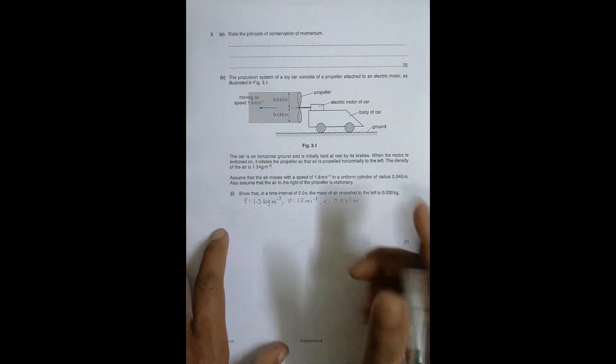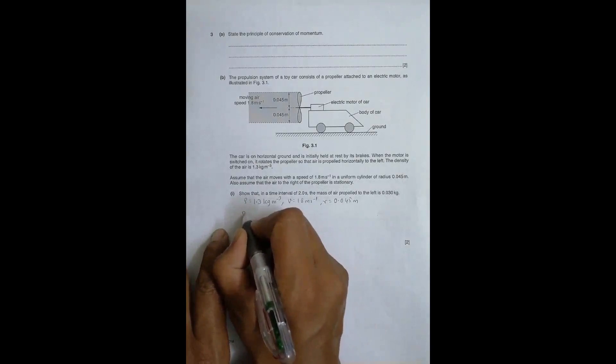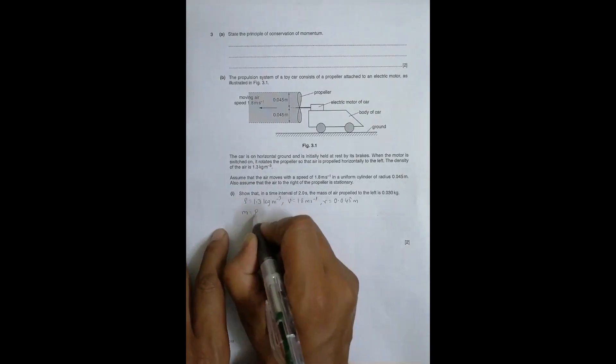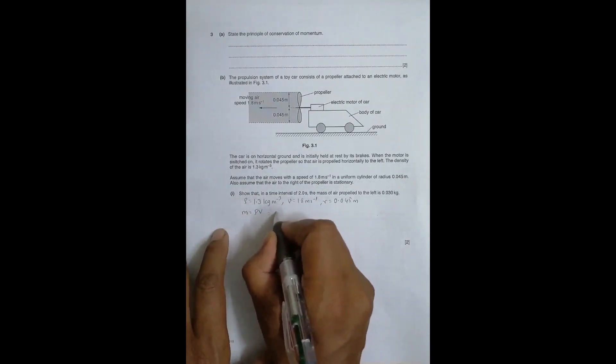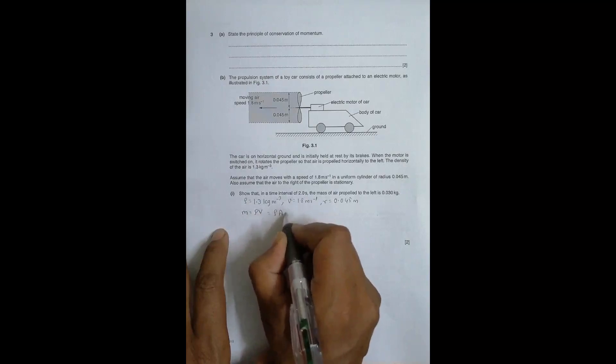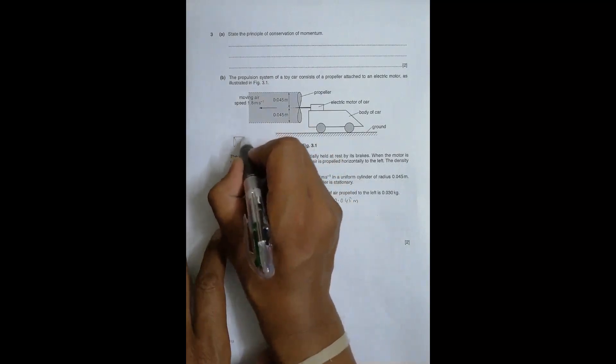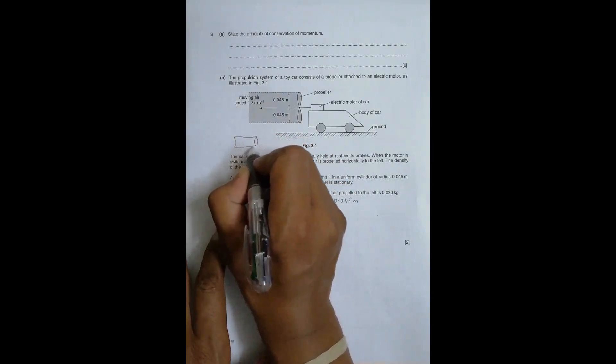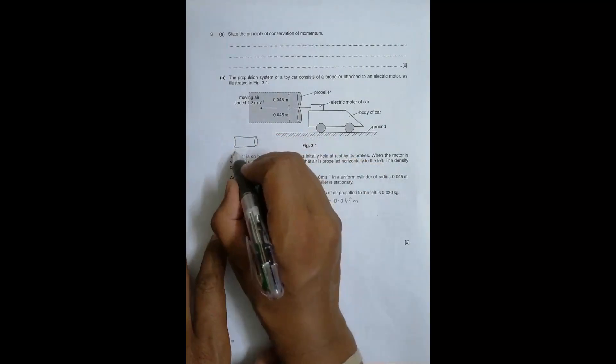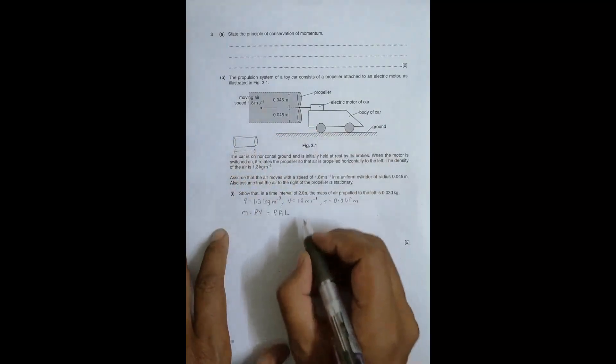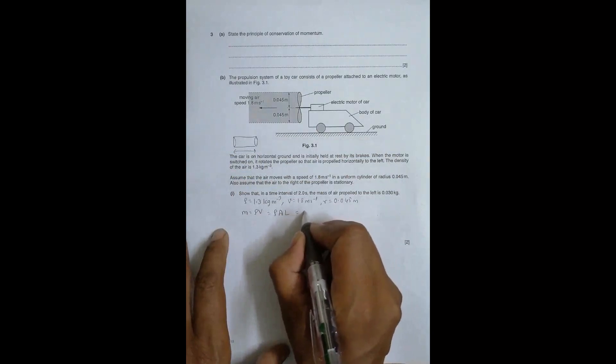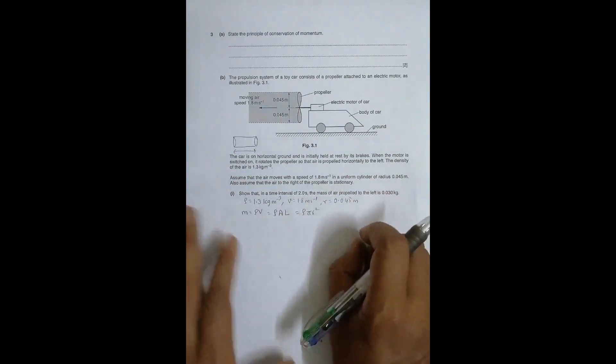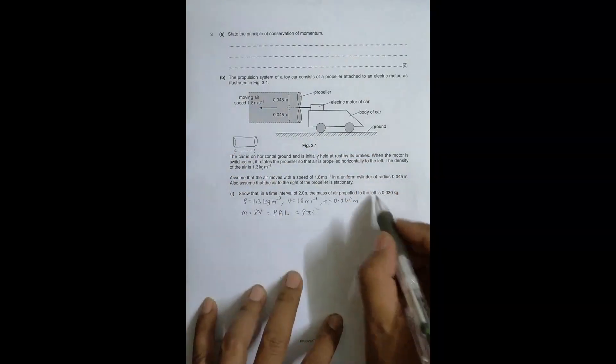First you have to find the mass propelled in this time interval. The mass of air propelled is equal to ρ into V. V is equal to A into the length of the column. ρ is there, A is equal to π r squared because it is said that air is thrown in the form of a cylinder.